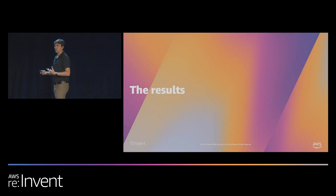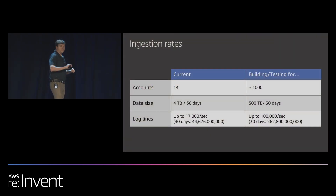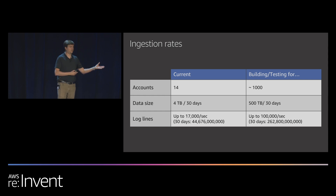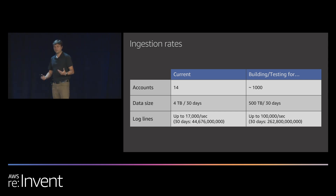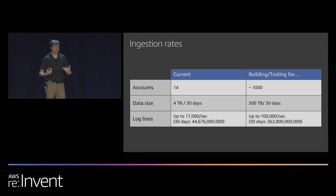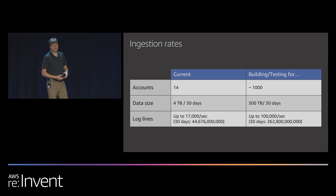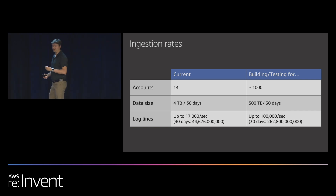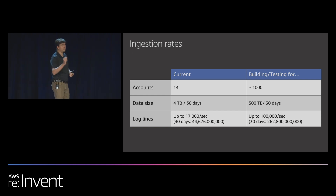Our results: we started with 14 accounts, grew to about 30, heading toward several hundred or thousands of AWS accounts. Data size was 4 TB over 30 days; we're scaling and testing to 500 TB over 30 days. We're currently seeing about 26,000 log lines per second — up from 17,000 — and we tested up to 100,000 lines per second. That's solid ingest performance.